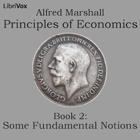Section 1. All wealth consists of desirable things, that is things which satisfy human wants directly or indirectly, but not all desirable things are reckoned as wealth. The affection of friends, for instance, is an important element of well-being, but it is not reckoned as wealth except by a poetic license. Let us then begin by classifying desirable things and then consider which of them should be accounted as elements of wealth. In the absence of any short term in common use to represent all desirable things or things that satisfy human wants, we may use the term goods for that purpose.